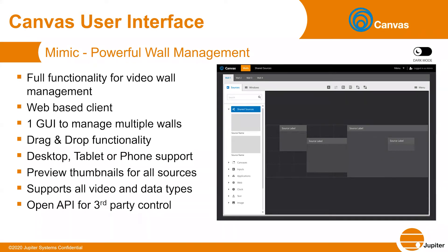This allows you to easily identify a source you want to present before it goes to the wall. You simply drag and drop it from your list on the left onto the mimic and then place that anywhere, any size, on the video wall. The thumbnails can also be active on the video wall as well — that is an option you can turn on or off for security purposes. You have access to all types of video and data sources: shared sources, canvases, inputs, applications, web pages, clocks, text, or images. This simple drag and drop function makes it very easy for operators to use, and it is also available through our open API for third-party control such as a touch panel.